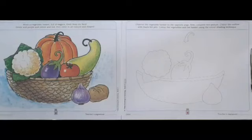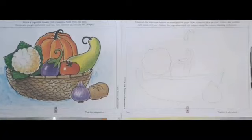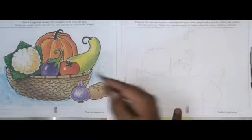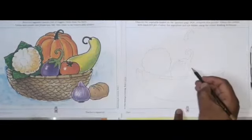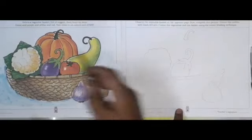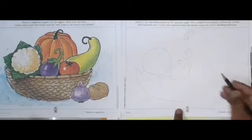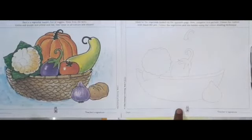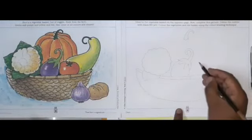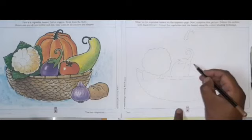Today we are going to draw vegetable basket in textbook. First we draw tomato. First we take point here for measurement and point so our drawing is better.